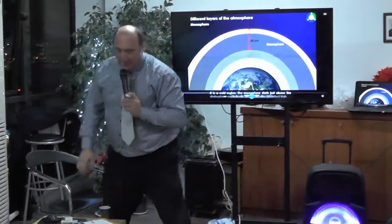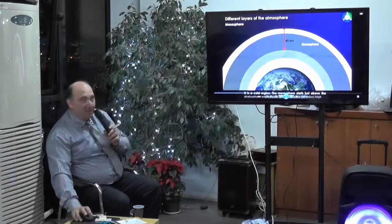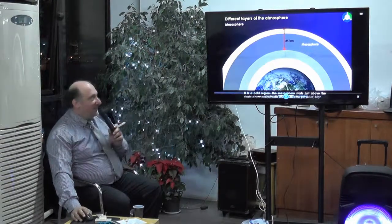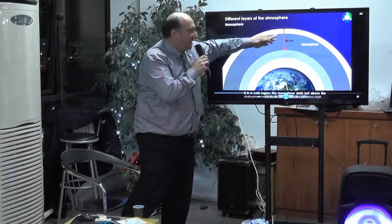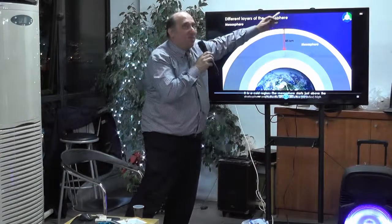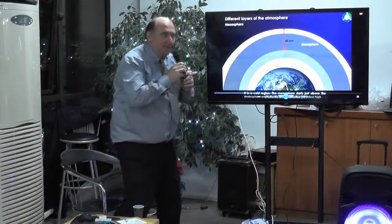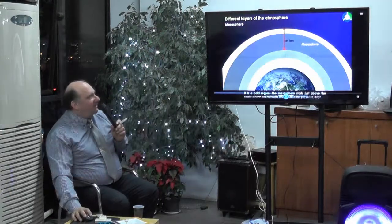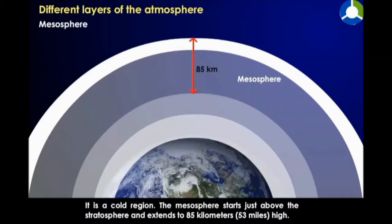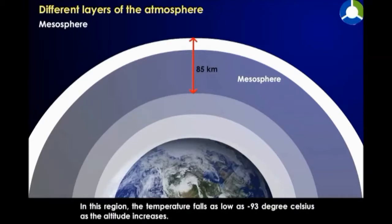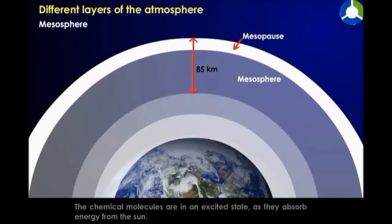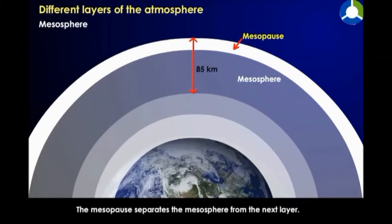The mesosphere is 85 km. The air in this layer is less dense, and above it there is no oxygen — it starts to become a vacuum, like space. This is the coldest region, at 53 miles high. The temperature falls as low as minus 93 degrees Celsius. As altitude increases, chemical molecules are in an excited state as they absorb energy from the sun. The mesopause separates the mesosphere from the next layer.